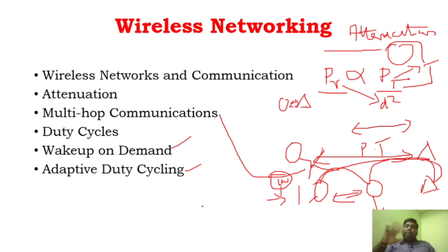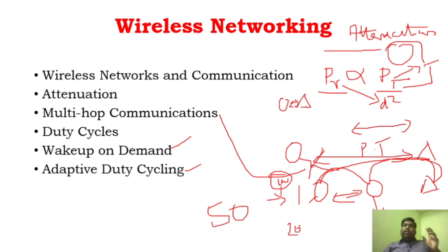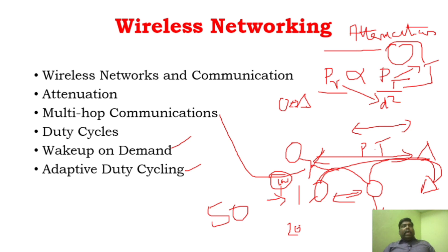Another technique is adaptive duty cycling. For example, if you have 50 sensor nodes, not all 50 nodes will go to sleep mode at the same time. It is designed so that 20 nodes will be active and 30 nodes will be in sleep mode. Then those 20 nodes go to sleep and 30 nodes become active. That is known as adaptive duty cycling — all this is done to preserve energy. This is about wireless networking, an important challenge in WSN.